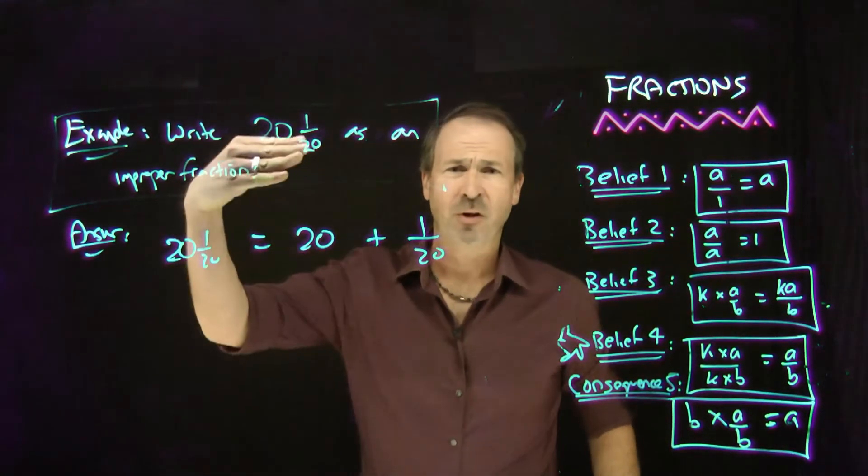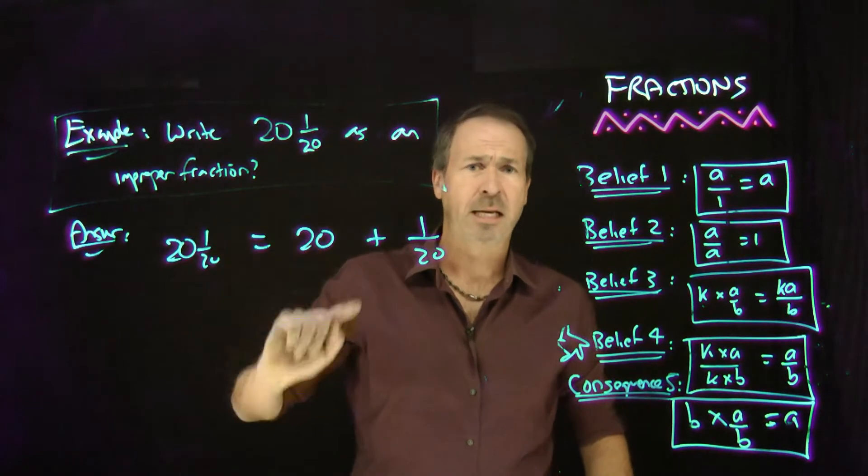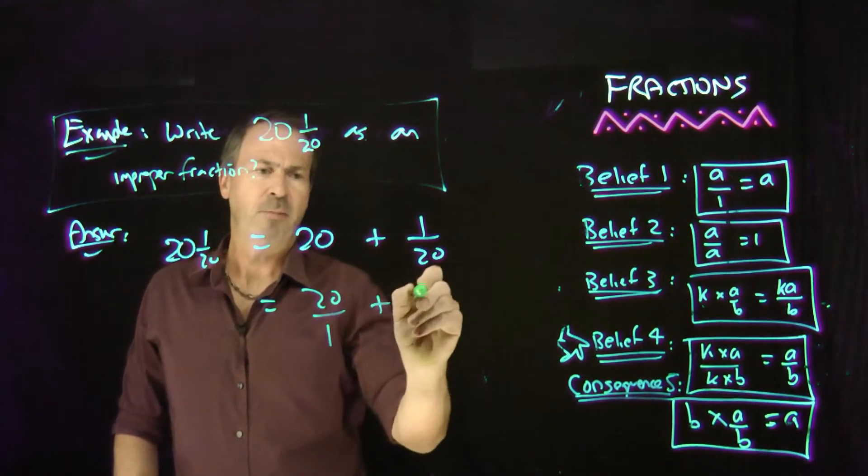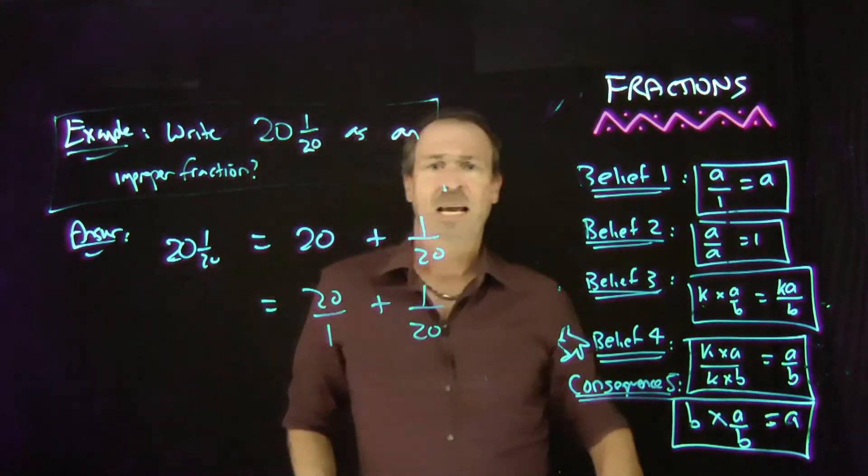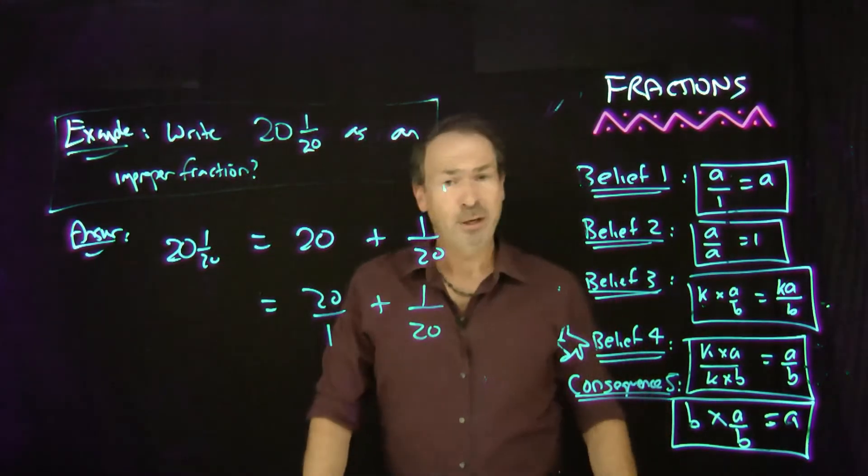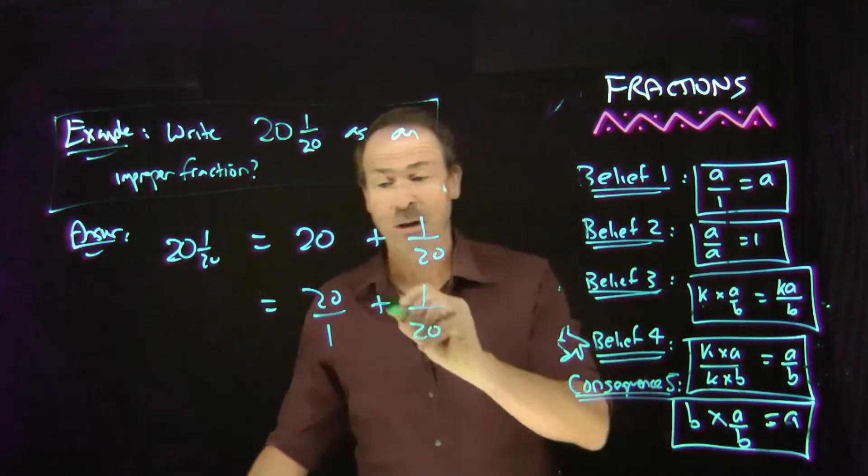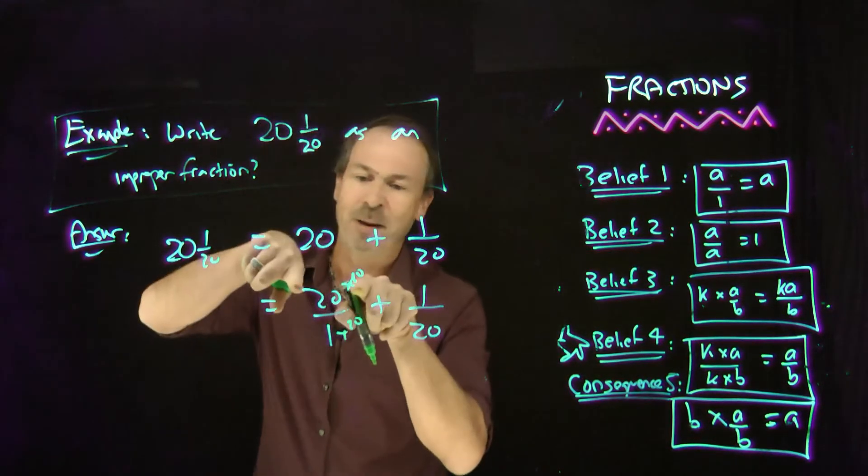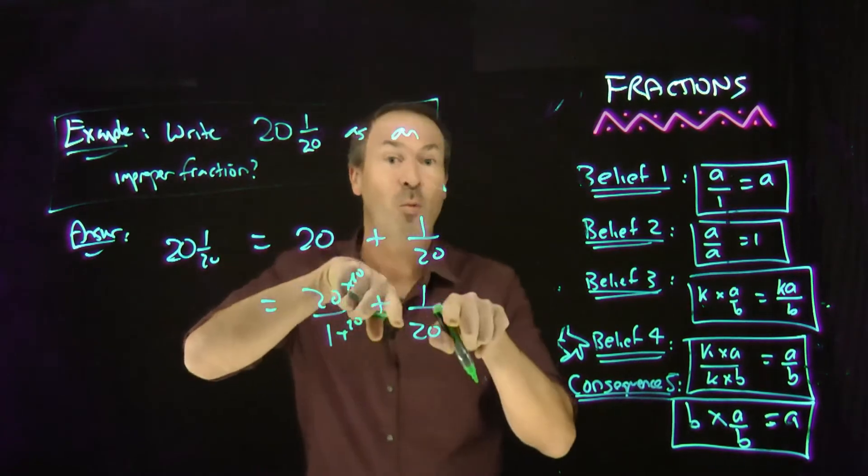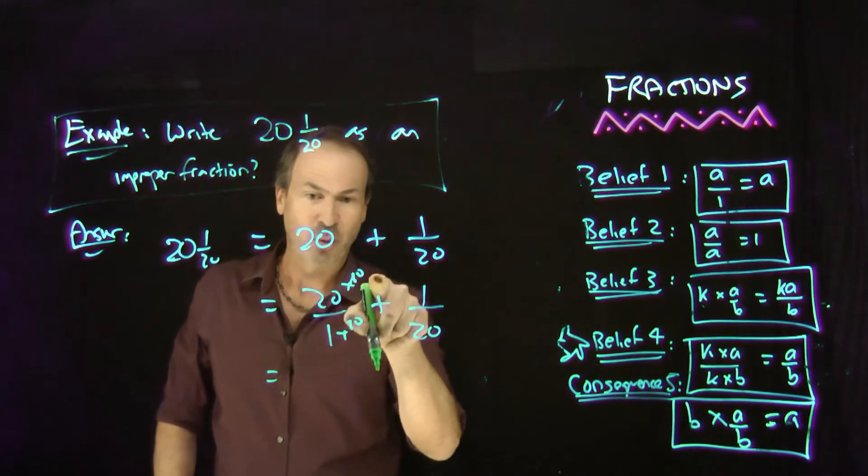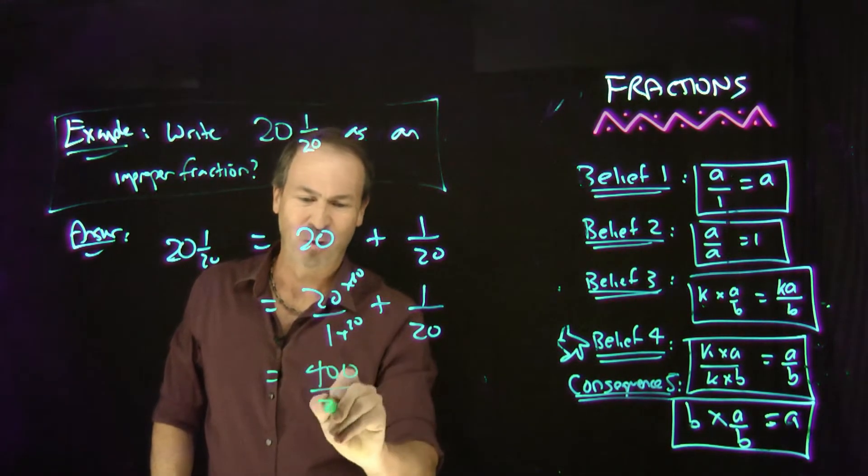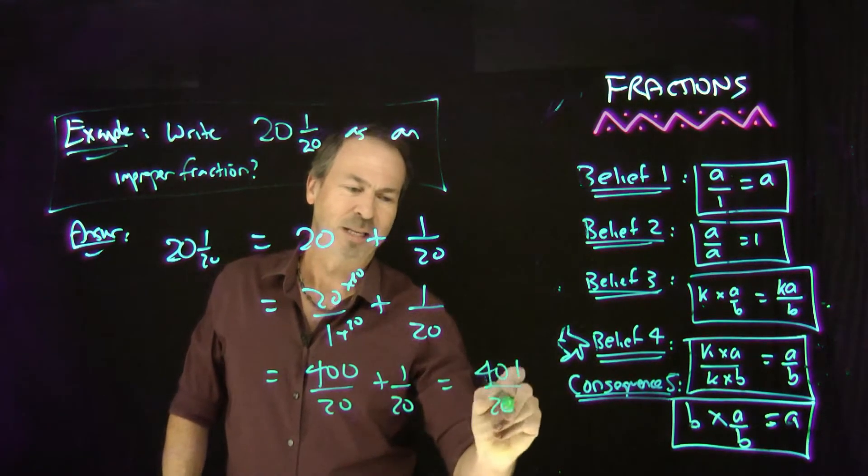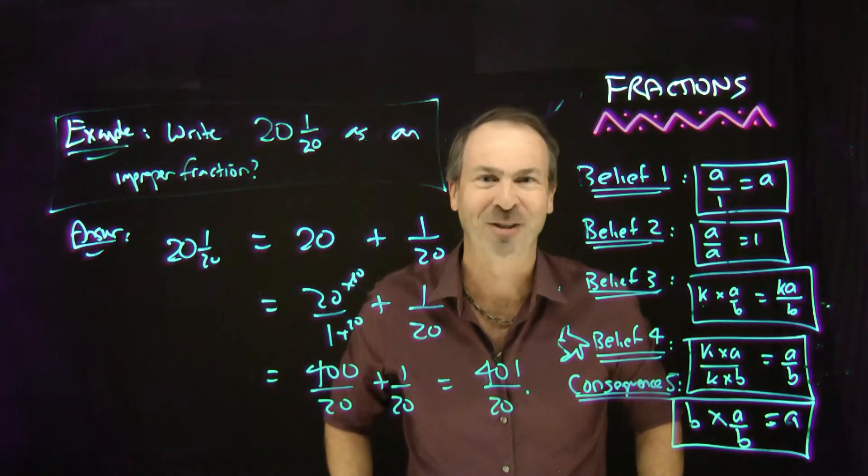I want this to be a fraction. A single numerator and a single denominator. So let me write the 20 as a fraction. I'm going to do this 20 over 1 plus 1 twentieth. So now I'm just adding fractions. Let me do that by doing a common denominator. Let's multiply this top by 20 and this bottom by 20. What's the something? 20 times 20 is 400 over 20 plus 1 twentieth makes 401 twentieths. Bingo. There it is as an improper fraction.